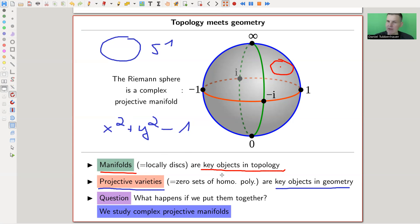And there are now key objects in geometry. And what happens if you put them together? That's what you do in mathematics all the time. You have a key object in one setting, and you have a key object in another setting. You just put them together, and you study projective manifolds. That's what they're called.